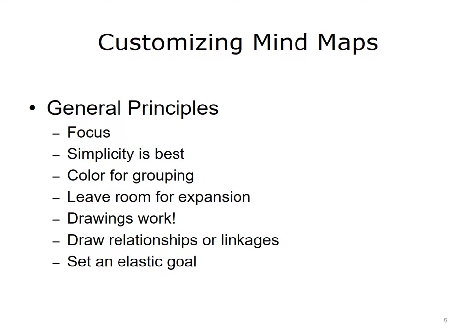Second, simplicity is best — start with the major features and then drill down to the more detailed. Best to start with a simple surface structure and work to add limbs and leaves as the project or tasks become clearer. Third, the use of color is helpful as a mechanism for grouping similar things. Fourth, leave room for expansion because as the task definitions grow, so does the tree — have erasers handy. Fifth, drawings really do work; illustrating the linkages or relationships between concepts or branches is beneficial, helping observers understand the impact that a change here may make there. Sixth, set a goal, but be flexible and willing to adapt as the map begins to flesh out.